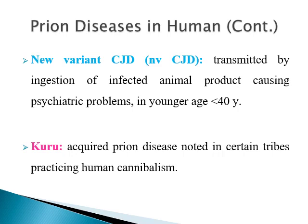The third human form is called Kuru, which develops in certain tribes practicing cannibalism — people who ingest human flesh or human internal organs.